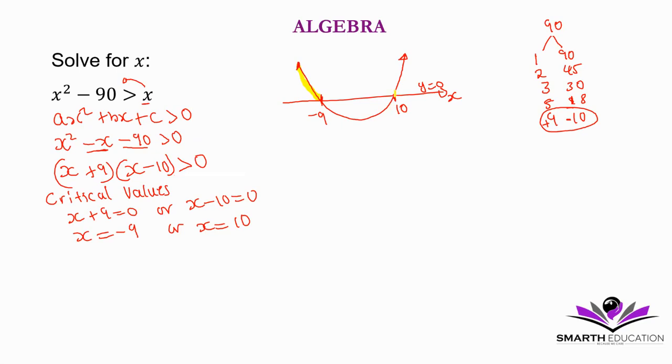So where is the graph above the x-axis? Which is here. This part and this part. This yellow part is above the x-axis. This is when x is less than negative 9, and then when x is greater than 10. We're saying from here going to the right, and then from here going to the left. That's the solution.